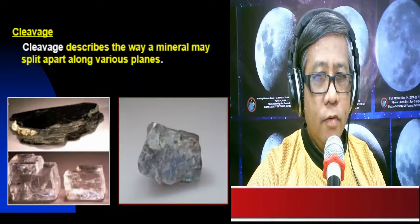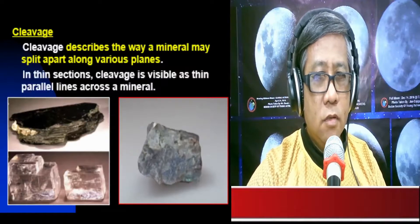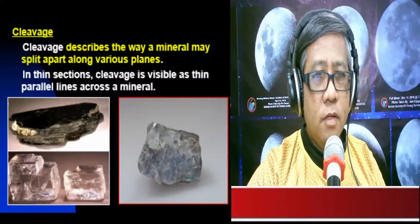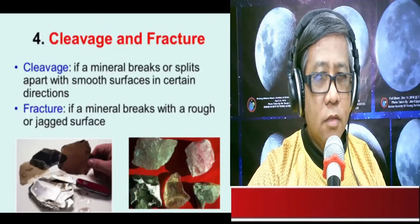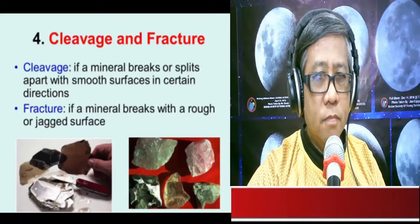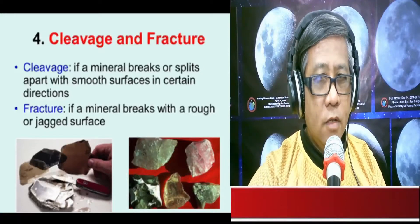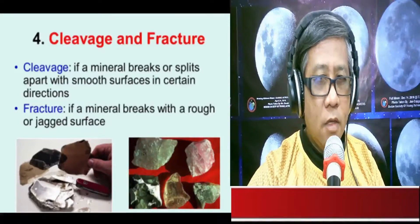Another physical property exhibited by most minerals is cleavage. Cleavage describes the way a mineral may split apart along various planes or in thin sections. It is visible as thin parallel lines across a mineral. Simply put, cleavage refers to the way a mineral breaks or splits apart with smooth surfaces in certain directions. If a mineral breaks with a rough or jagged surface, we call that a fracture.